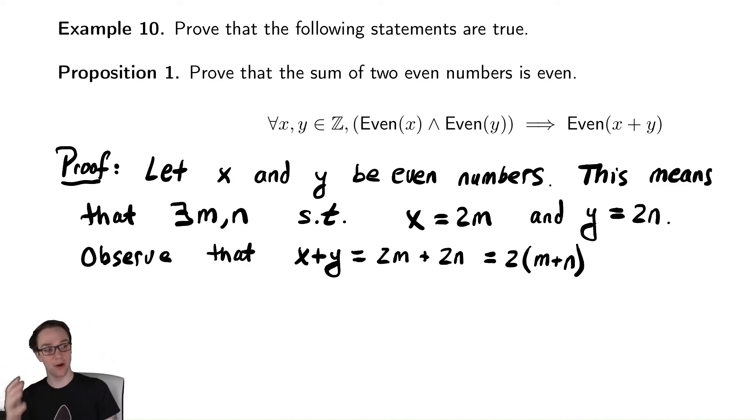And this is now an integer, m plus n. The integers are closed under addition, meaning that if you add two integers, it remains an integer. We have an integer times 2, so x plus y must be even.